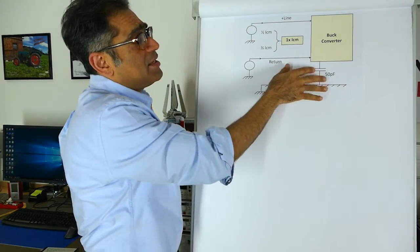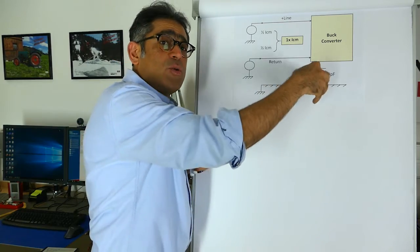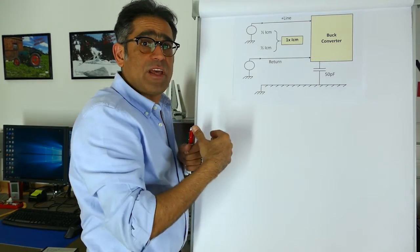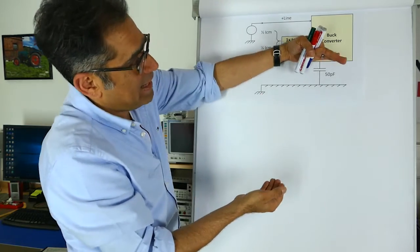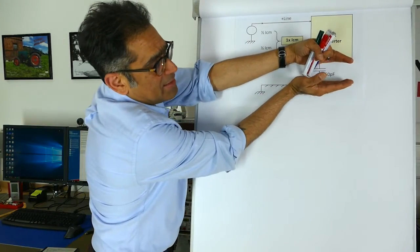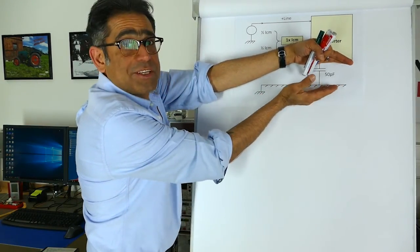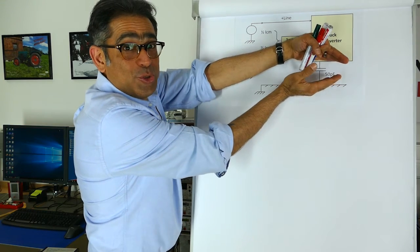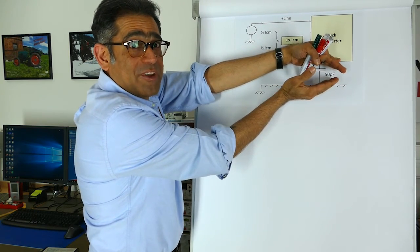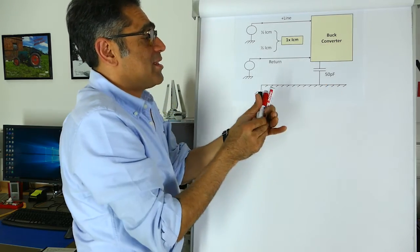And imagine that instead of the 50 picofarad capacitor that I had soldered onto the board in order to demonstrate earlier on, you now have got a plate here, you've got another plate underneath, and in between you've got an insulator. Let's call that a dielectric. So you still have some amount of capacitance, and exactly the same thing happens.